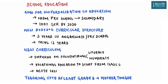Let us now discuss the provisions of NEP 2020 dealing with the school education sector. This policy aims for universalization of education — though universalization of school education through RTE already exists — but a watershed moment is that NEP 2020 will aim to universalize education from preschool to secondary level with 100% gross enrollment ratio by 2030. By attempting to achieve this, NEP 2020 will bring 2 crore out-of-school children back into the mainstream through the open schooling system.